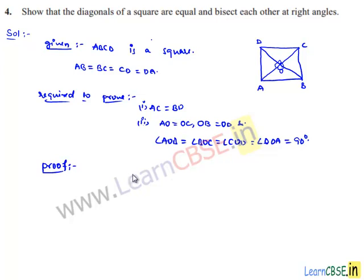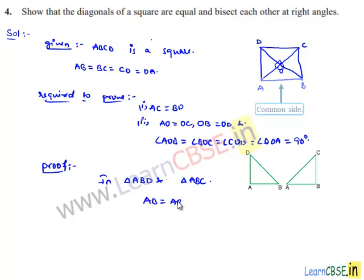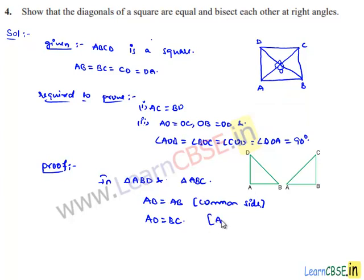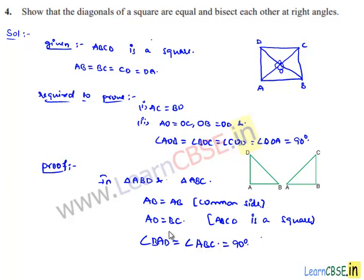Now let us move on to the proof. Consider both triangles — triangle ABD and triangle ABC. AB will be equal to AB as it is a common side for both triangles. And we can say AD is equal to BC as ABCD is a square, so all sides will be equal. Also, angle BAD in triangle ABD is equal to angle ABC of triangle ABC, as in the square the sides are perpendicular to each other. So in these two triangles, one corresponding angle and two sides are equal.